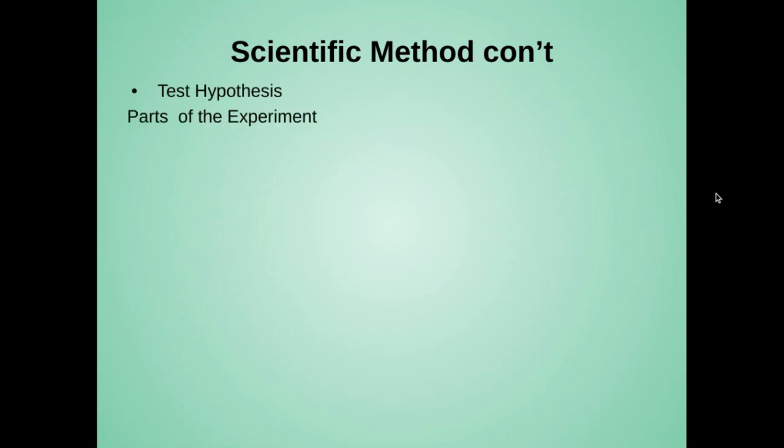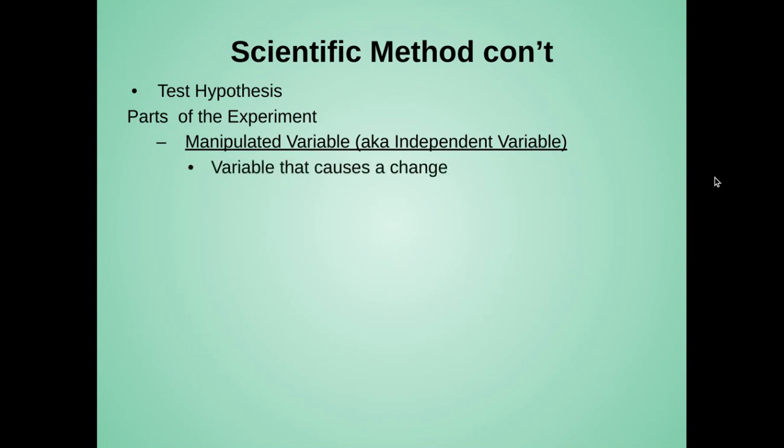When we test a hypothesis, we have to identify the parts of the experiment. One of those parts is called the manipulated variable, also known as the independent variable. This is the variable that causes a change, or I change.